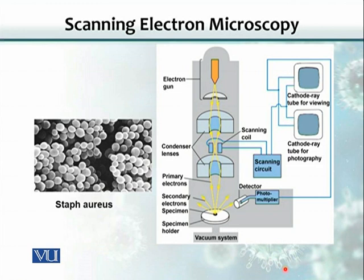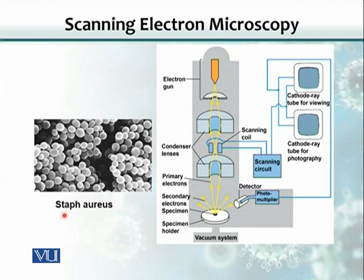Another version is scanning electron microscopy. The source of shorter wavelength is again the electrons, but the difference is that when electrons strike the specimen, they are reflected off. These reflected electrons are collected by a special detector and amplified through the electronic circuitry of the scanning electron microscope. The image formed is a kind of three-dimensional image — this is the advantage of scanning electron microscopy, as you can see the organism in 3D. Here is the image of Staphylococcus aureus: these are spherical cells, and as you can see, they look like beautiful beads.